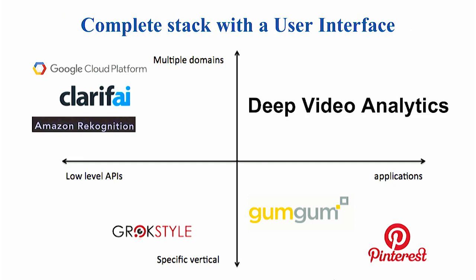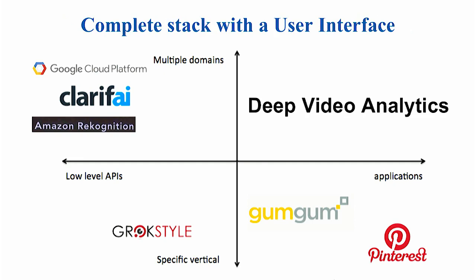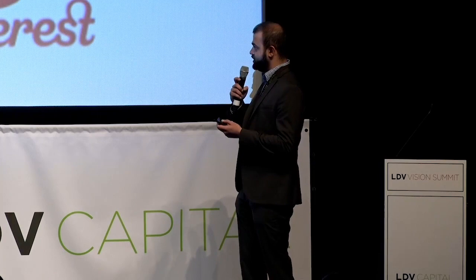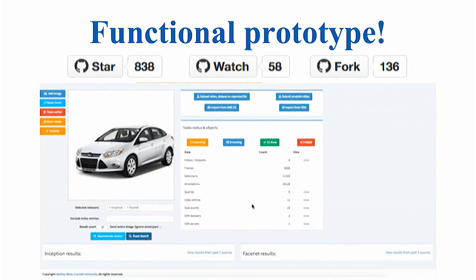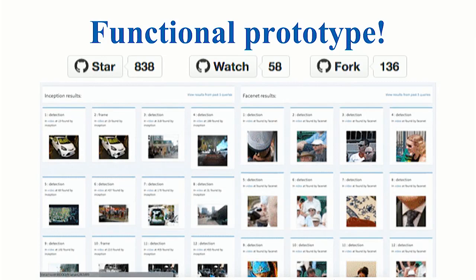What we plan to build is a complete stack with a user interface that can be quickly customized across multiple domains and serve as a foundation for future vision apps. With Deep Video Analytics you can store videos and images, collect and organize annotations, apply deep learning algorithms, index and perform visual search. Best of all, it can work on-prem, be hosted, work on AWS, and be integrated with existing third-party services. It's already on GitHub and receiving an amazing amount of attention — you can go right away and test it.